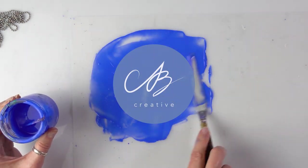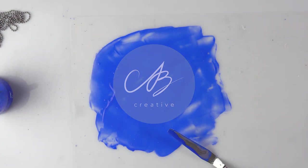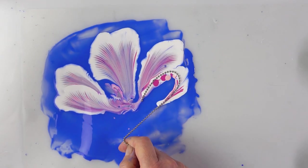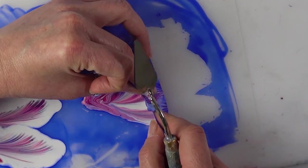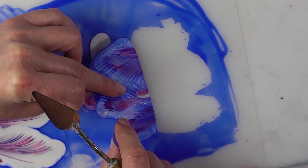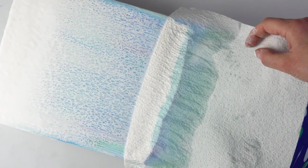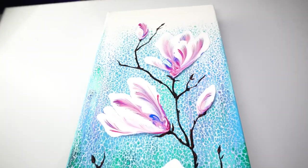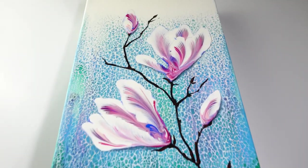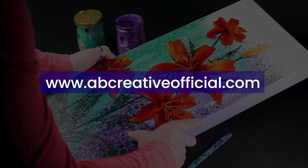Hello everyone, today we are taking pouring to the next level again and making a beautiful magnolia piece using fun techniques anyone can try. I'm so excited by how this one turned out, let's get right into it. You can find this piece and others for sale on my website abcreativeofficial.com.